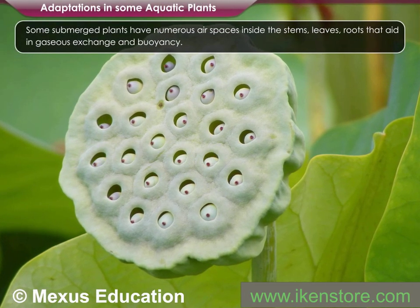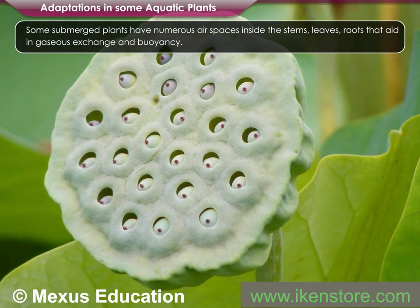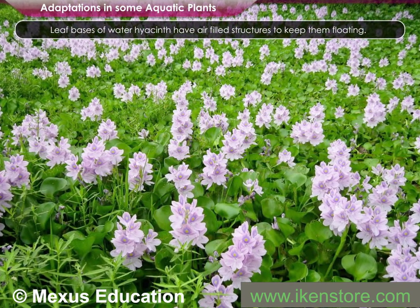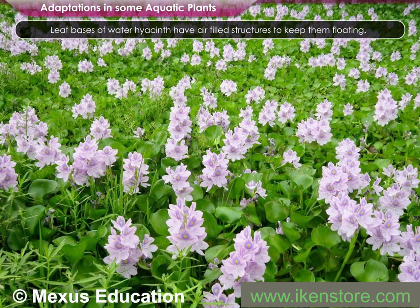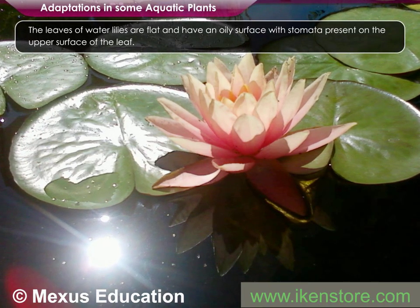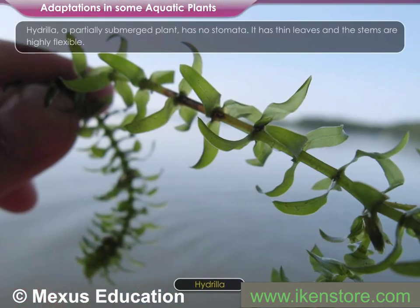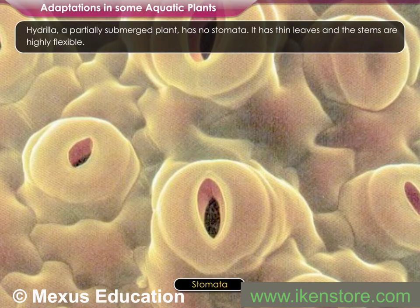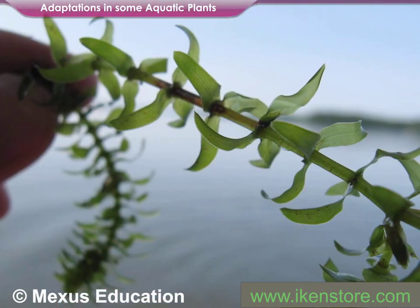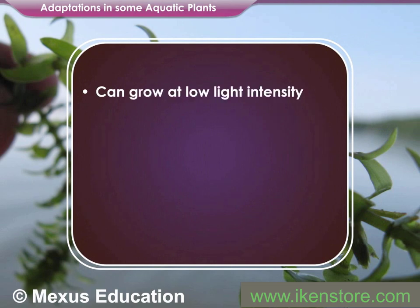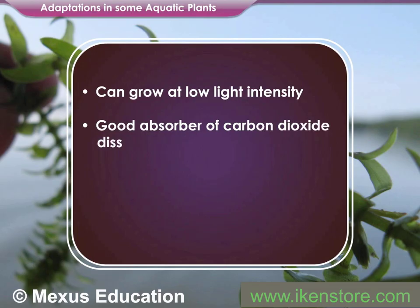Some submerged plants have numerous air spaces inside their stems, leaves, and roots that aid in gaseous exchange and buoyancy. Leaf bases of water hyacinth have air-filled structures to keep them floating. The leaves of water lilies are flat and have an oily surface with stomata present on the upper surface of the leaf. Hydrilla, a partially submerged plant, has no stomata; it has thin leaves and highly flexible stems. The main adaptations that give hydrilla an advantage over other native plants are: it can grow at low light intensities, it is better at absorbing carbon dioxide dissolved in water, it is able to store nutrients for later use, and it can tolerate a wide range of water quality conditions.